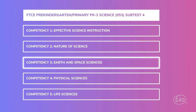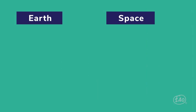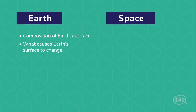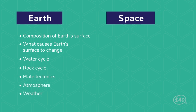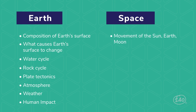Competency 3 covers Earth and Space Science. For the Earth part, you'll need to know about things that make up the Earth's surface and what causes it to change over time — including the water and rock cycles, plate tectonics, and atmosphere and weather. You also need to understand the impact humans have on Earth, such as using renewable and non-renewable resources and global warming. For the space part, you'll need to know about the movement of the Sun, Earth, and Moon, what their different locations mean — like seasons and eclipses — and basic milestones of space exploration history.